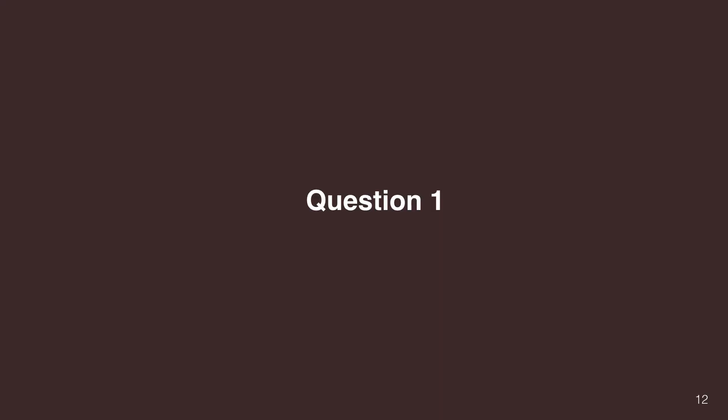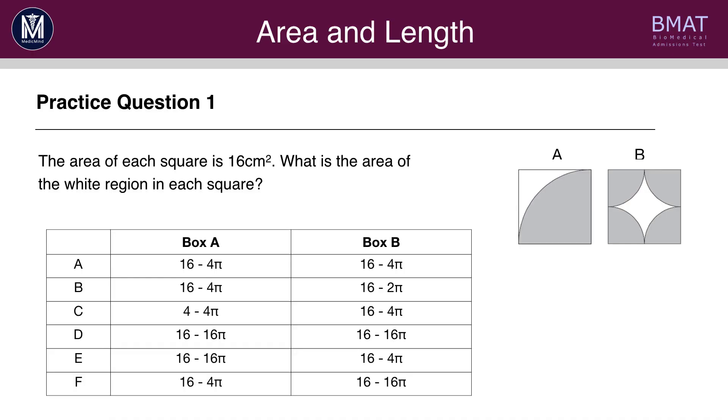Let's have a go at some questions. Pause the video and have a go. The answer here is A. So for this question, you have to work out the white region in each square. Remember, the area of the white region is equal to the area of the whole square minus the area of the grey shape.